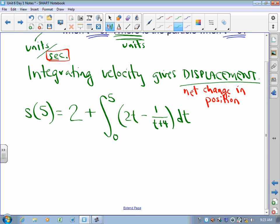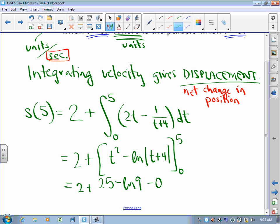So now what? Well, now we take an antiderivative, t squared minus the natural log of absolute value of t plus 4 evaluated between 0 and 5. So what have I got? I've got 2 plus, substitute 5, substitute 0.